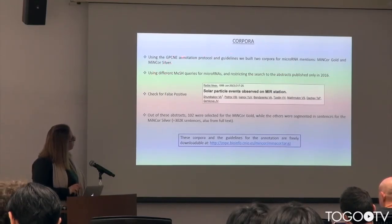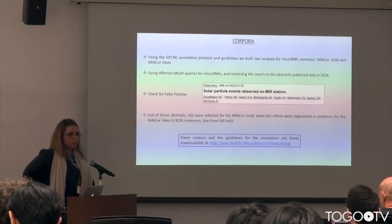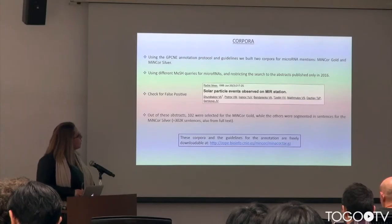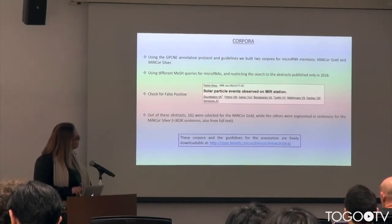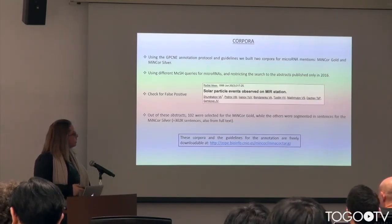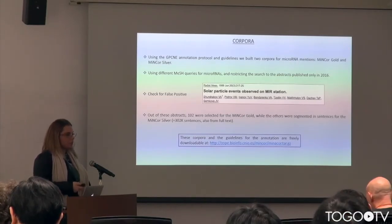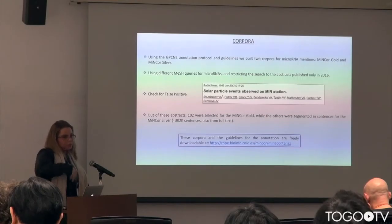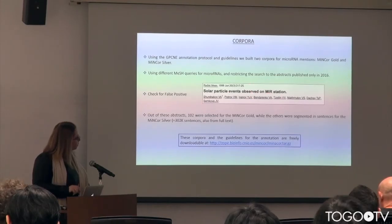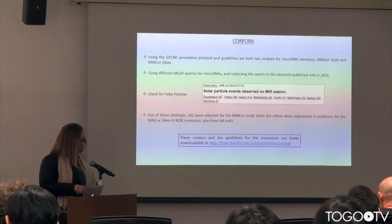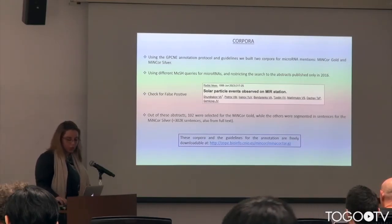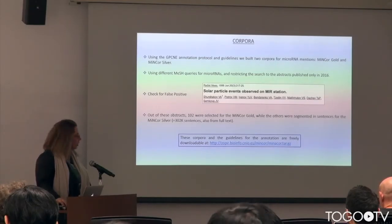This annotation protocol was used to build the corpora. We built a gold and a silver corpus — a manually labeled one and an automatically derived one. We retrieved from PubMed using different MeSH queries for microRNAs, different abstracts, restricting the search to 2016 so we could use them to analyze the entire PubMed. We checked for false positives and divided the pool of abstracts into two groups: one for the gold standard and one for the silver. Everything is freely downloadable.